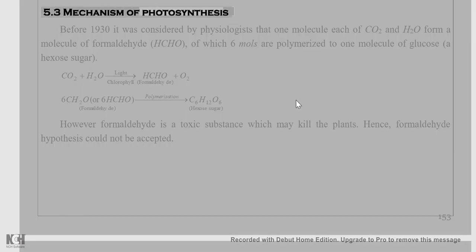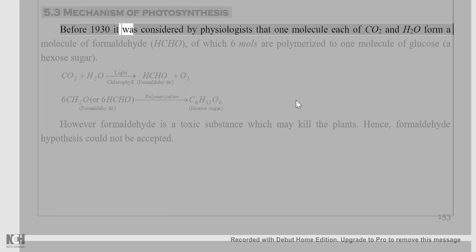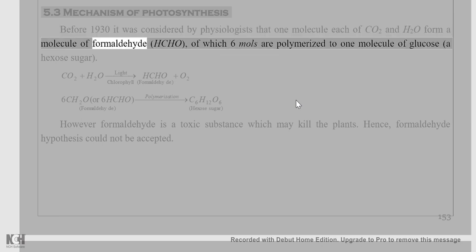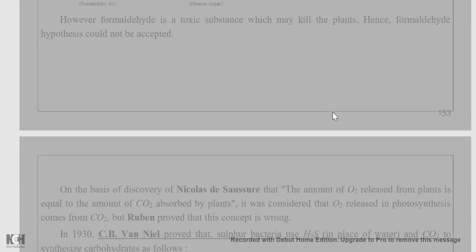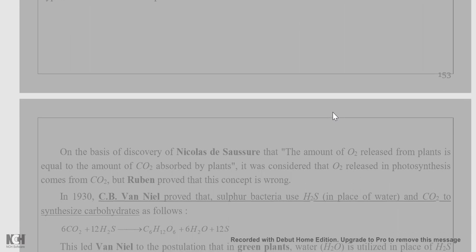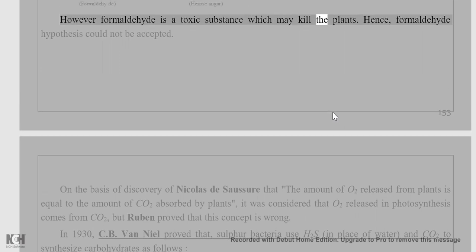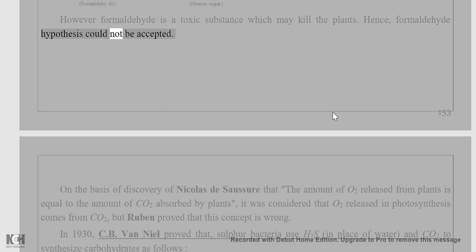In the mechanism of photosynthesis, before 1930 it was considered by physiologists that one molecule each of CO2 and H2O form a molecule of formaldehyde (HCHO), of which six moles are polymerized to one molecule of glucose, a hexose sugar. However, formaldehyde is a toxic substance which may kill the plants, hence the formaldehyde hypothesis could not be accepted.